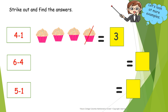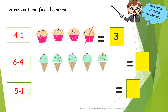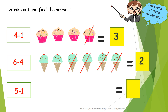Next one. There are six ice creams. One, two, three, four, five, six. Six minus four. So, we have to strike out four ice creams. When we strike out, we have to start from the back. One, two, three, four. Now, how many are remaining? One, two. Six minus four equals to two.